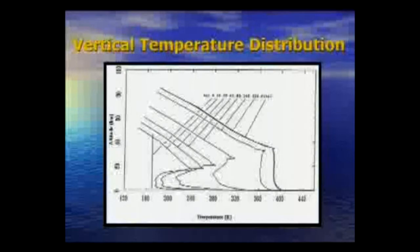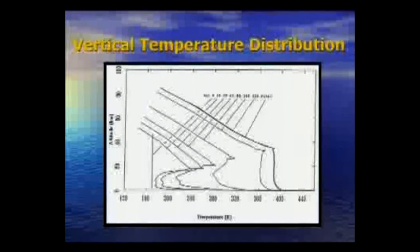Then 10 days, 20 days, 40 days, 80 days, 160 days, 320 days, and 640 days. And you can see it basically stopped warming at that point, so it came to what's called steady-state conditions.